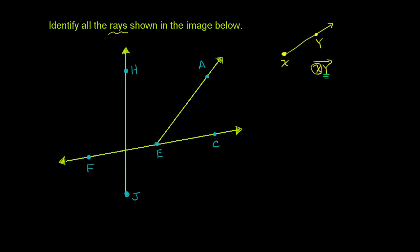We can start anywhere. Let's start at point j. From j, the only line goes straight up towards h, and then it keeps on going past h. So this is a ray. We would call it ray j,h — starting at j, going through h, and continuing on forever.